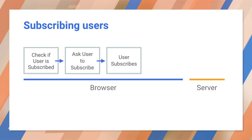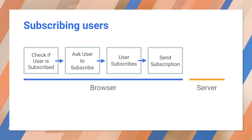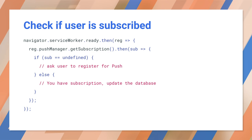This creates a subscription object that contains the endpoint URL of the push service, which is different for each browser, along with a public key for encryption. You send the subscription object for the user to the server and save it. Before you subscribe a user, check if you already have a subscription object for them. If you don't, update the UI to prompt the user to enable push notifications. If you do have the subscription object, update your server database with the latest subscription data. You need to perform this check every time the user accesses your app, because subscription objects can change during their lifetime.